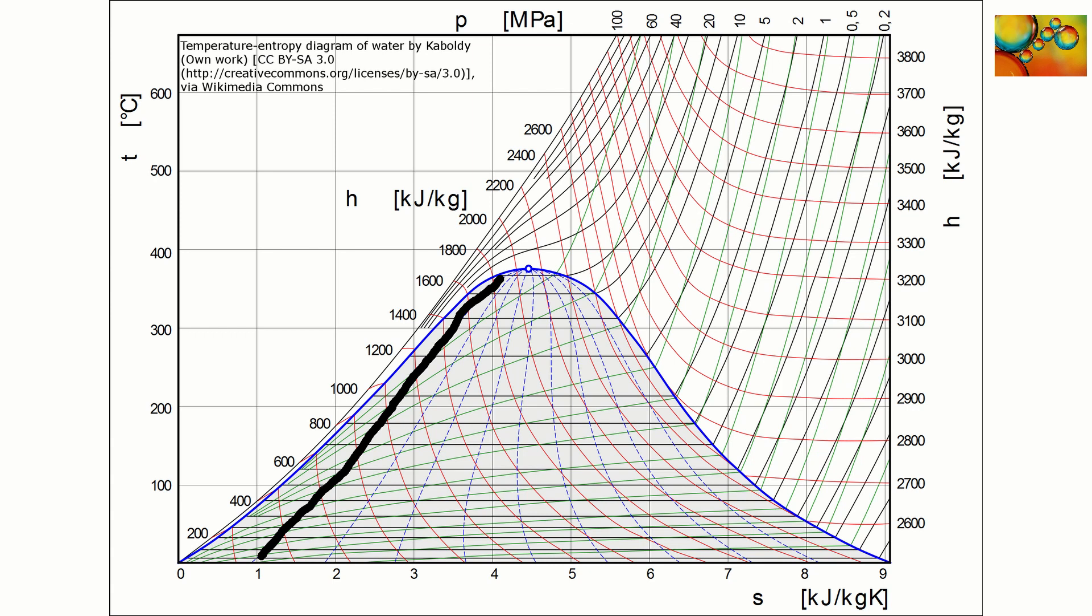For example, the highlighted line in this slide has quality of 0.1, meaning that only 10% of the mass is in the vapor phase. The line highlighted in this slide has quality of 50%, and the line highlighted in this slide has quality of 90%, and observe that it's close to the saturated vapor line.